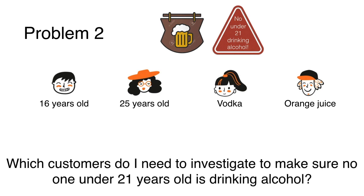Now the question is, which customers do I need to investigate to make sure no one under 21 years old is drinking alcohol? Now investigate could mean I could find out what they're drinking if I don't know, or I could find out their age if I don't know it. And remember that what we want to do is to not allow anyone who is under 21 to drink an alcoholic beverage. And again, I will give you 3 seconds and I'll tell you the answer, but I invite you to pause the video and find the answer yourself.